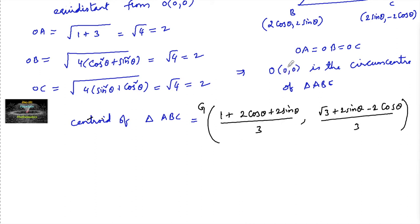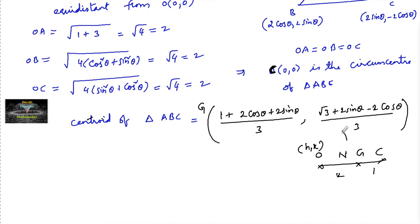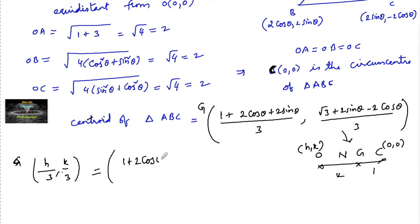Let G be the centroid and let the circumcenter be C at the origin (0, 0). Since the centroid divides the segment joining the orthocenter and circumcenter in the ratio 2:1, we can write: (2 times 0 plus 1 times H) divided by 3, and (2 times 0 plus 1 times K) divided by 3, equal to the centroid coordinates (1 plus 2 cos theta plus 2 sin theta) over 3, and (root 3 plus 2 sin theta minus 2 cos theta) over 3.